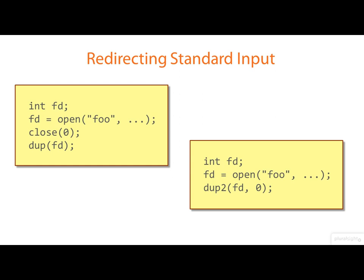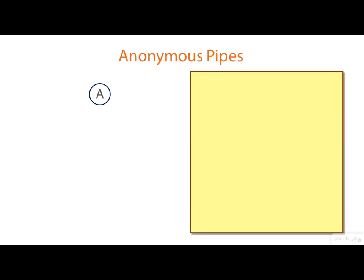Now if we start to use this kind of trick to manipulate the file descriptors on the ends of a pipe, things start to get really interesting. Let me talk you through the typical sequence of events when we create and use an anonymous pipe. We start here with a process which I call A.